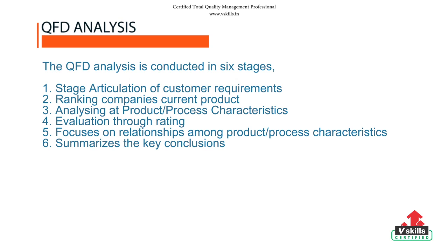In the fifth step, the roof of the house focuses on relationships among product and process characteristics, showing whether the characteristics reinforce or conflict with one another. In the last stage, the team summarizes the key conclusions and ranks the relevance of product or process characteristics to the attainment of customers' wants or needs.